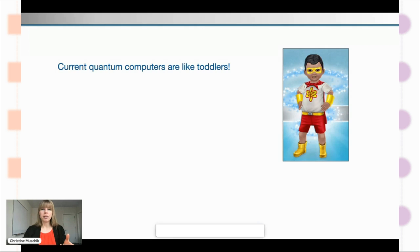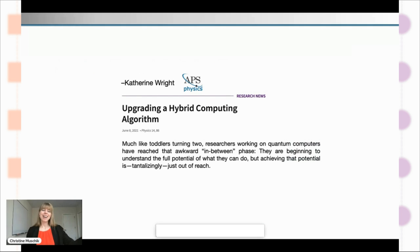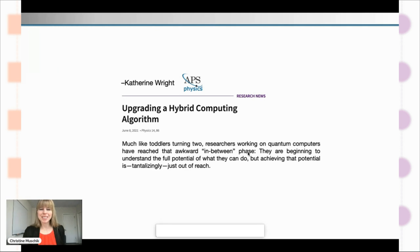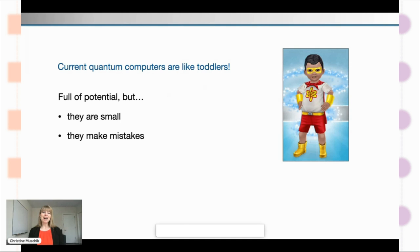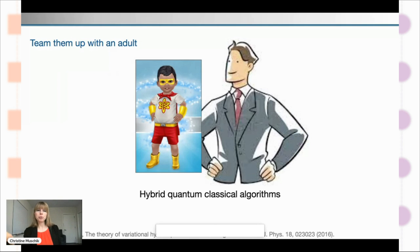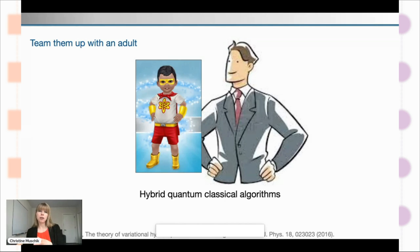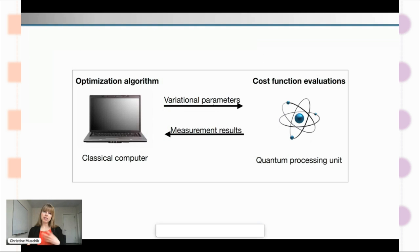The idea of comparing quantum computers with toddlers was a brilliant idea by Catherine Wright, who wrote an APS article about this comparison. The key is really that they're full of potential but struggle also still. So what is the reasonable thing to do? The reasonable thing to do with a toddler is to team them up with an adult — that's exactly what we're doing, teaming up our toddler quantum computer with a grown-up classical algorithm on a regular, fully developed computer. We often cast our problem in the form of an optimization problem.